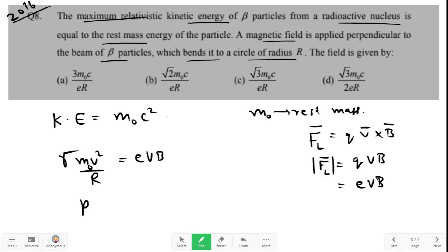Now this can be written as pv divided by R is equal to evB, where p is equal to γm₀v. p is not equal to m₀v, this is only true in non-relativistic cases. p is equal to γm₀v where γ is equal to 1 by root of 1 minus v²/c².